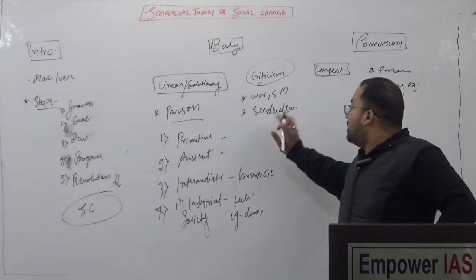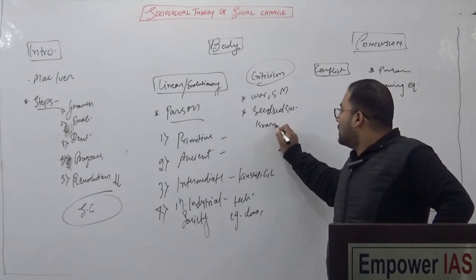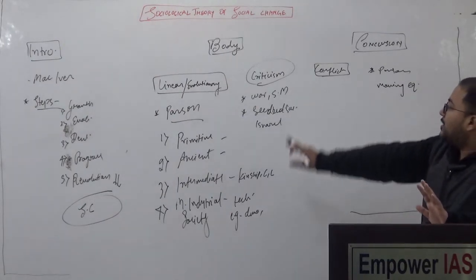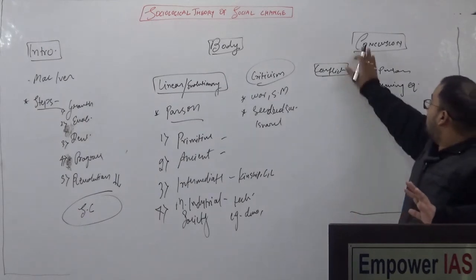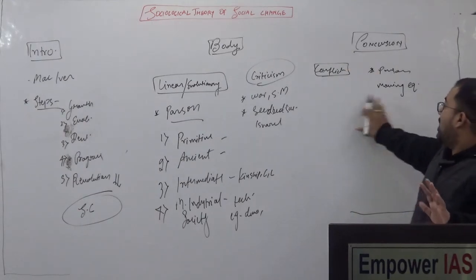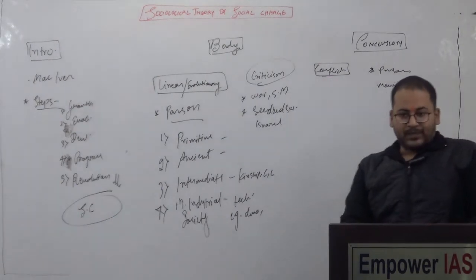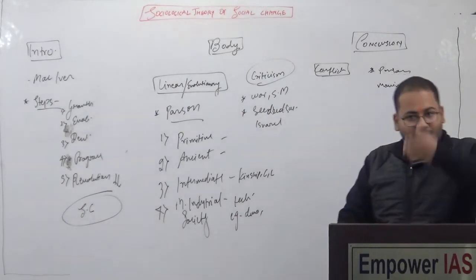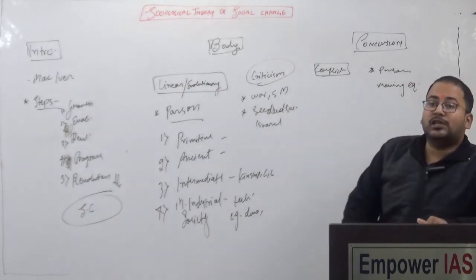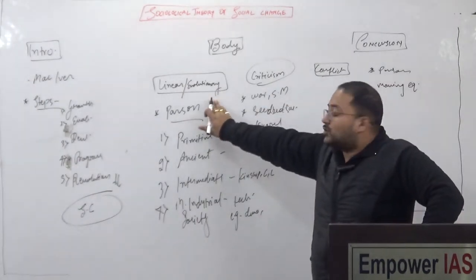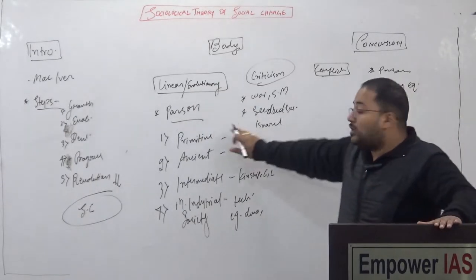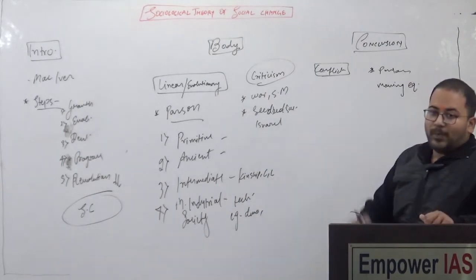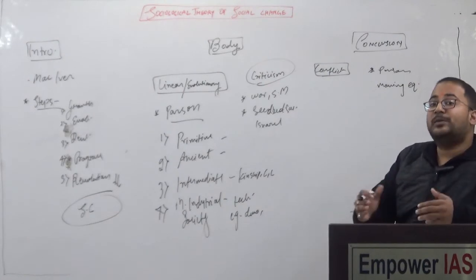So the concept is over — introduction, definition of social change, what are the stages of social change, linear theory of social change, and some criticism. Now the conflict theory of social change. As linear theory said, society moves from one place to another and never comes back to its previous stage. Conflict theory is just opposite to the linear theory — linear theory is about consensus in nature, while conflict theory says it is the conflict in the society which brings social changes.